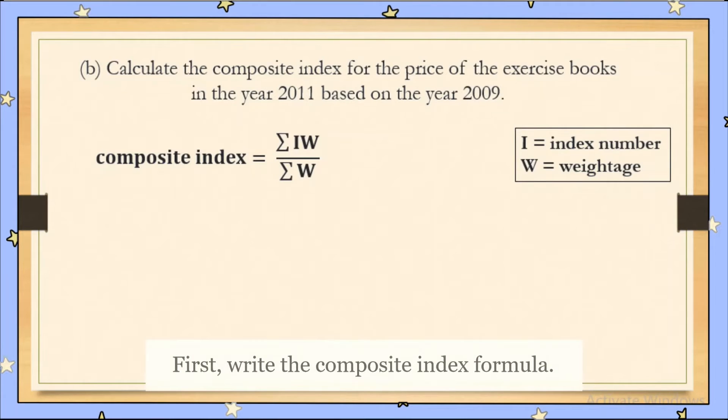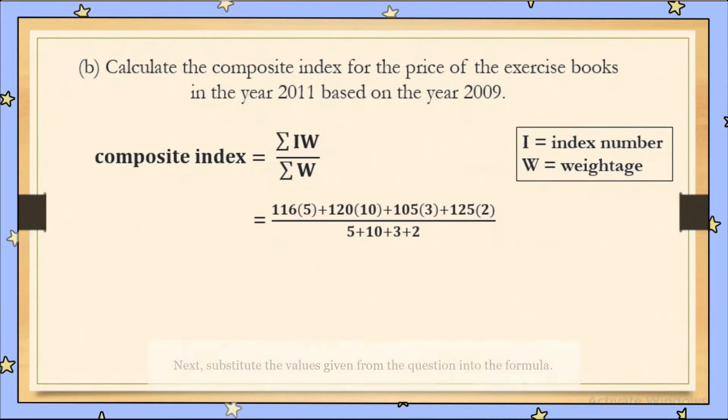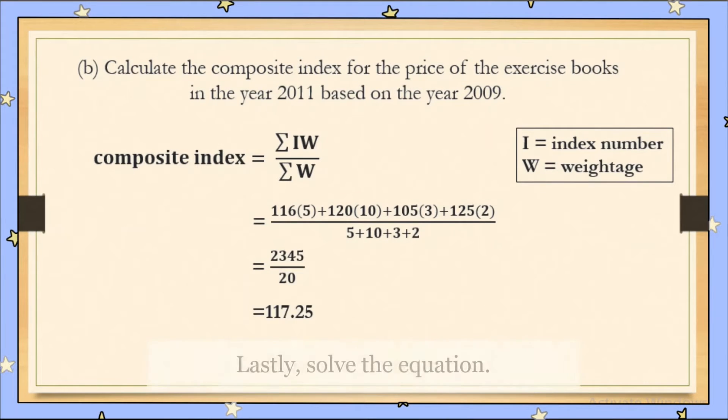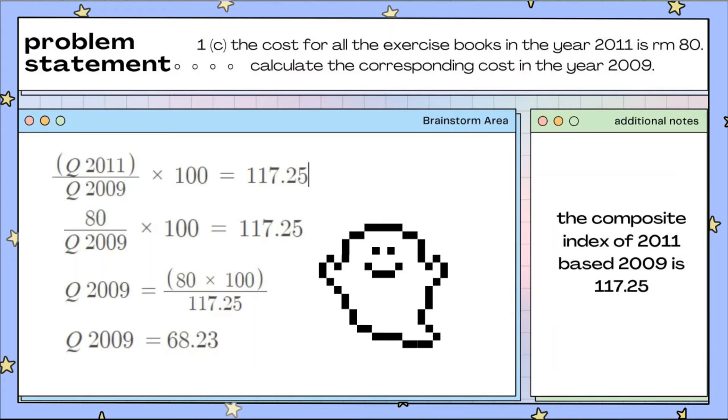For question 1B, first write the composite index formula, then substitute the values given from the question into the formula, and lastly solve the equation.